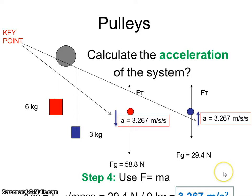Now we calculate the acceleration. F equals M times A. The force is 29.4. Mass is 9. We plug and chug. We get 3.267.